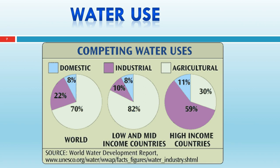Several reasons explain high agricultural water use in low and mid income countries: low productivity of crops, more population requiring more food for food security, and high dependence on agriculture. Additionally, advanced countries import products that require huge quantities of water, meaning we are effectively exporting our valuable resource water to high-income countries. That is why water consumption is high in low and mid income countries — 10% water is used in the industrial sector and 8% in the domestic sector.